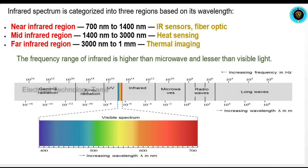You can control the wavelength. There are three regions. The first one is the near infrared region, with a value of 700nm to 1400nm. The second one is the mid infrared region, with a value of 1400nm to 3000nm.